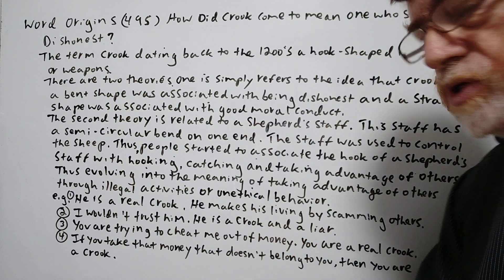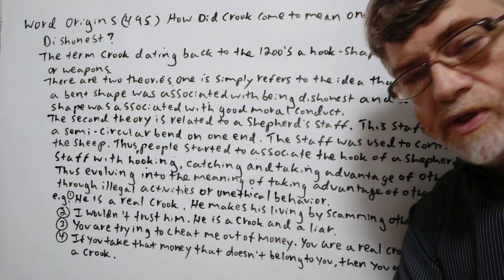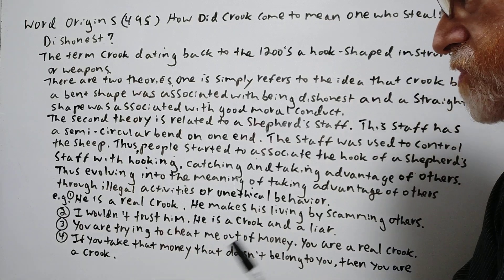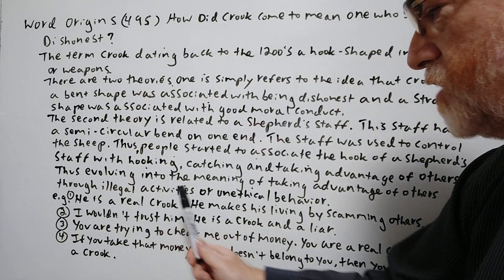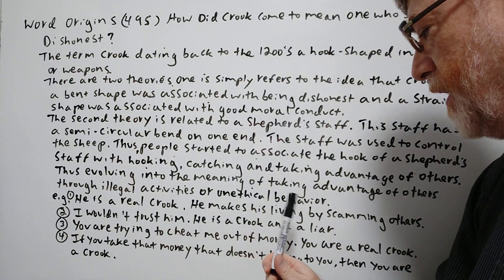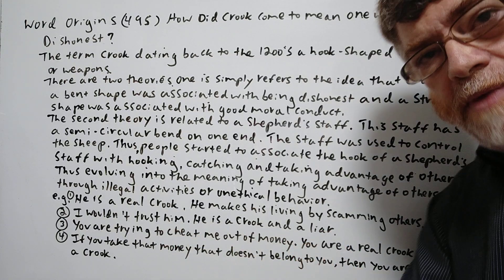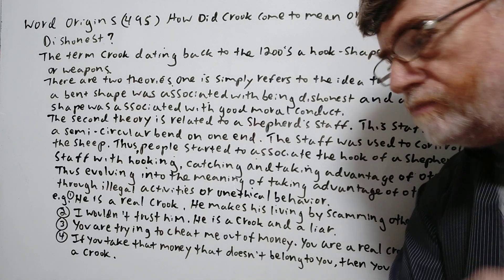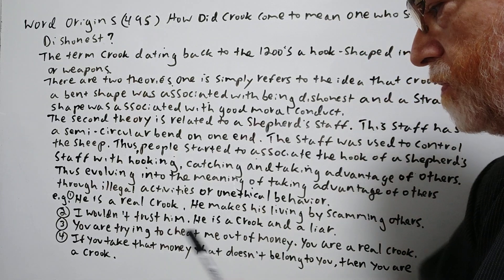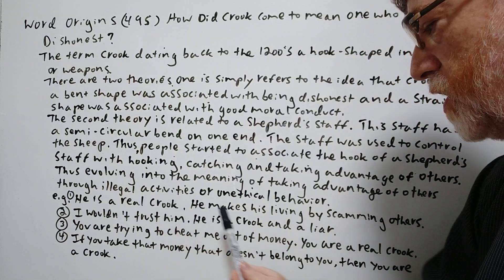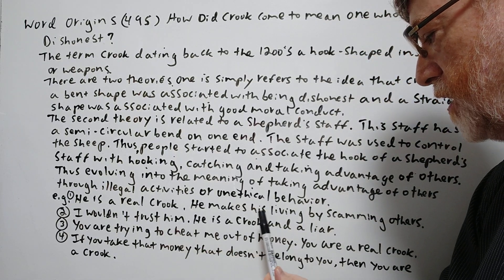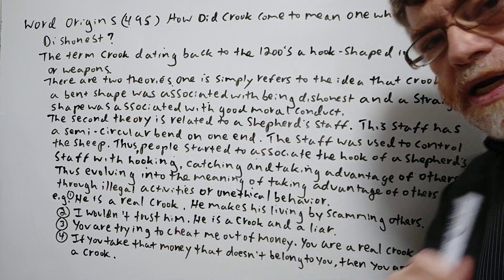We have four examples to show how it's used. Number one: 'He is a real crook. He makes his living by scamming others.' Number two: 'I wouldn't trust him. He is a crook and a liar.'